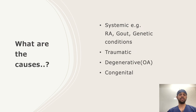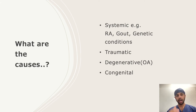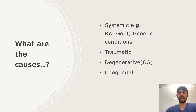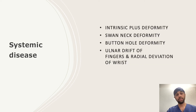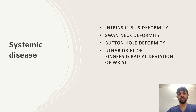Now we start the basic and main theme of this topic — finger deformities. What are the causes? I have divided them into four: systemic, traumatic, degenerative, and congenital. In the systemic category, we usually see rheumatoid arthritis, gout, and genetic conditions. The deformities in these include intrinsic plus deformity, swan neck deformity, boutonnière deformity, ulnar drift of the fingers, and radial deviation of the wrist. These are classical for rheumatoid arthritis but can happen in other conditions too.